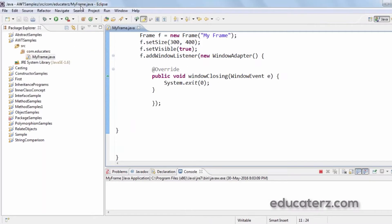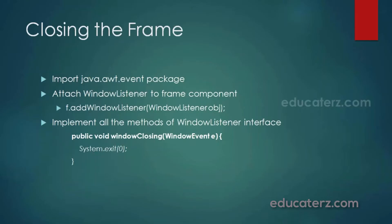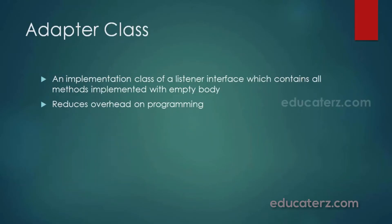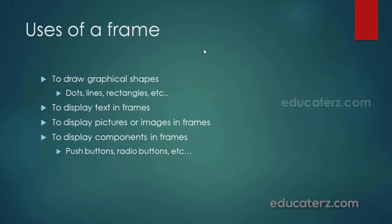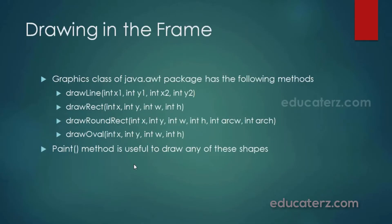The main advantage of adapter classes is that it reduces overhead on the programmer. Uses of a frame include drawing graphical shapes like dots, lines, rectangles, and also to display text in frames, pictures, images, and components like push buttons and radio buttons. For drawing inside a frame, we require the Graphics class of the java.awt package, which has methods like drawLine, drawRect, drawRoundRect and so on.